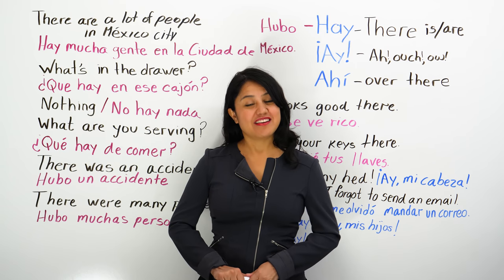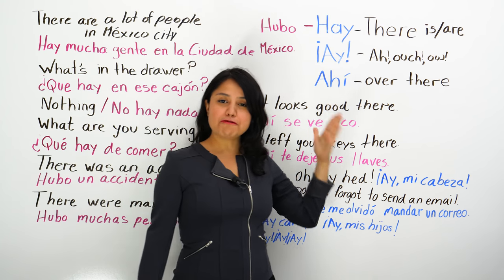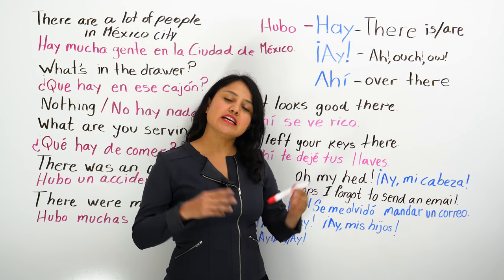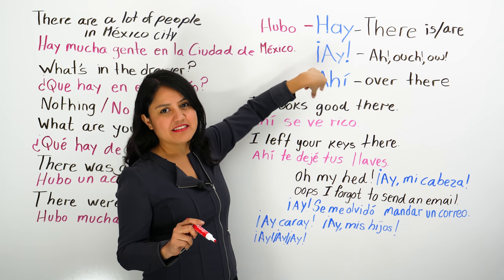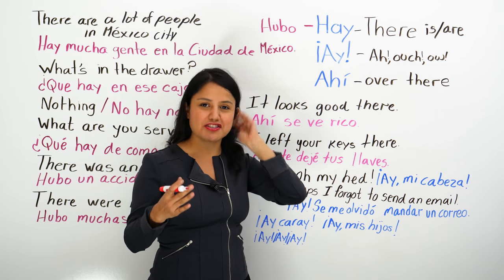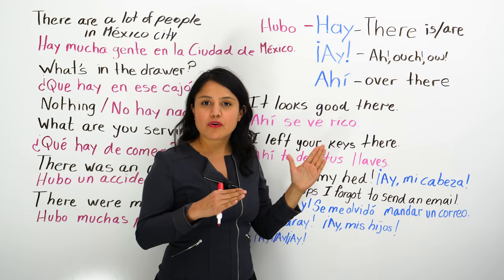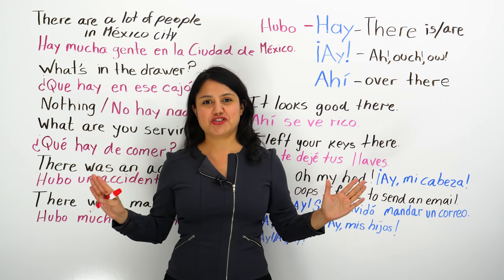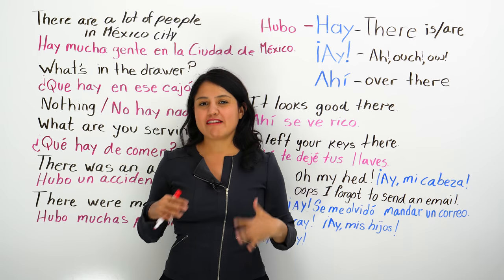In today's class, we're going to talk about three words that I wrote on the whiteboard — three words, tres palabras — that cause confusion to a lot of you. It's normal that they cause confusion because they sound the same. Just hear me: ay, ay, ay. So that's why I want to explain exactly what each word means, because even though they sound the same, they are completely different. They have nothing to do with each other, so you really have to understand one by one. And I believe that after this video, you will have a very clear mind about these words.